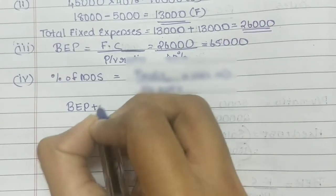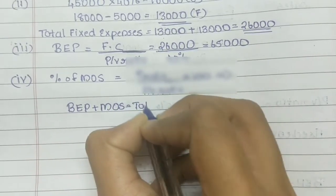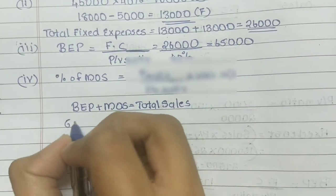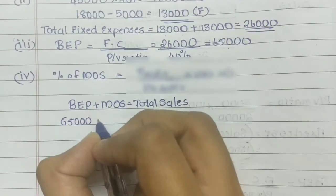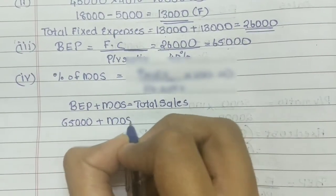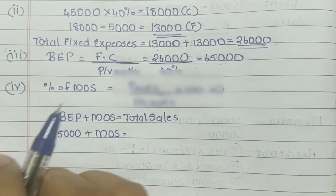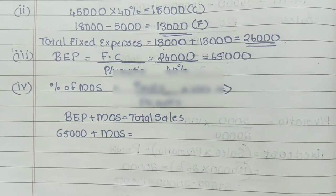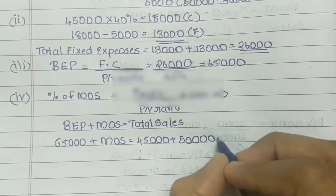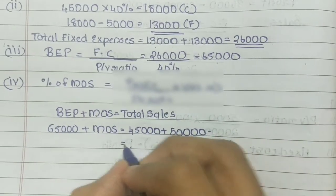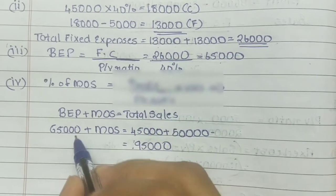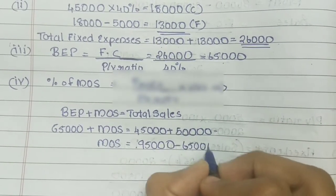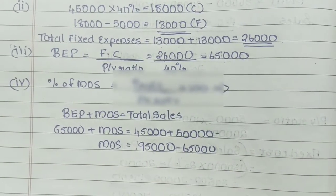BEP plus MOS equals total sales. We are going to find the BEP, which is 65,000. Plus MOS, total sales is 95,000. BEP is 65,000 and MOS is 30,000.